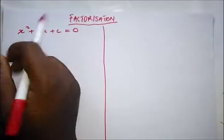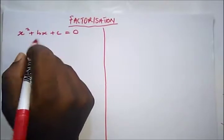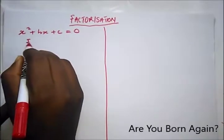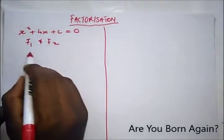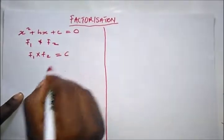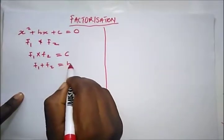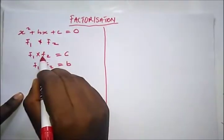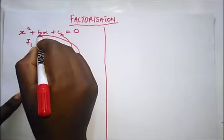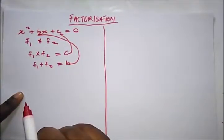We're going to be looking for the various values of x — x will have two values. To factorize this quadratic equation, we need two factors, f1 and f2, such that f1 times f2 gives us C, and f1 plus f2 gives us B. So f1 × f2 = C and f1 + f2 = B.